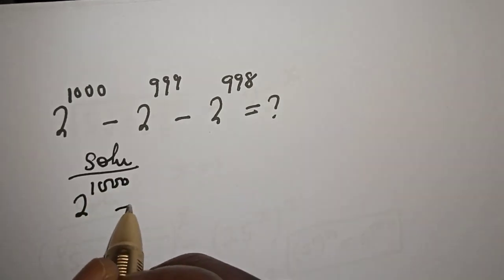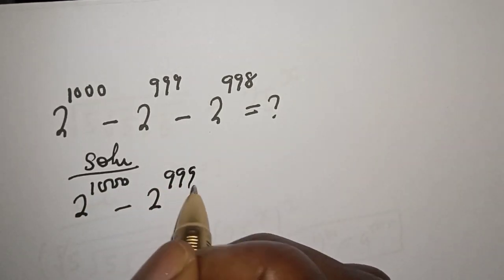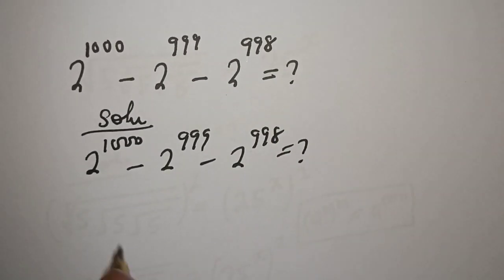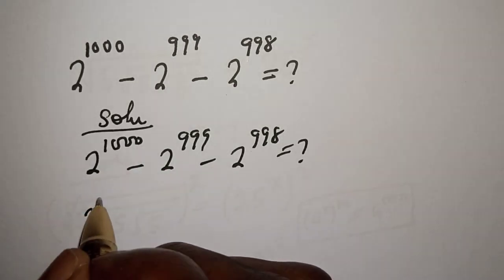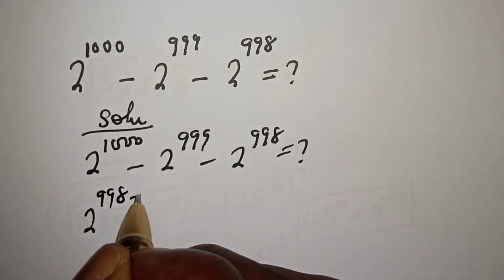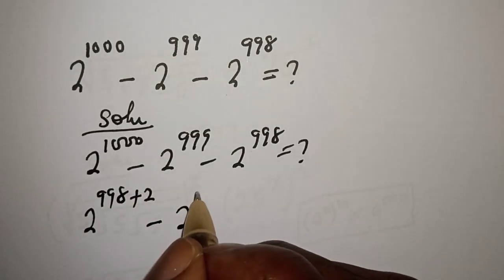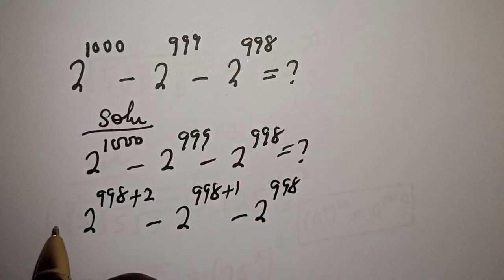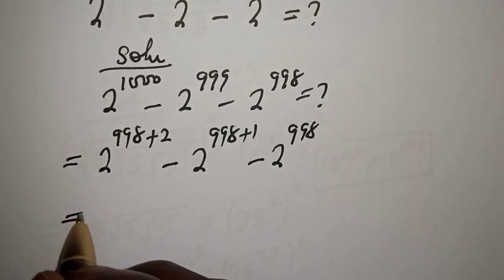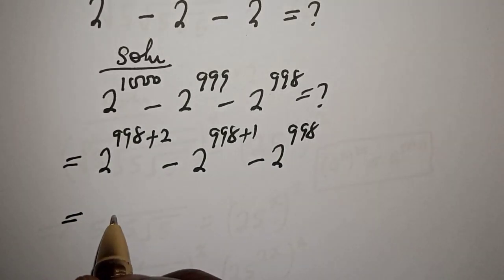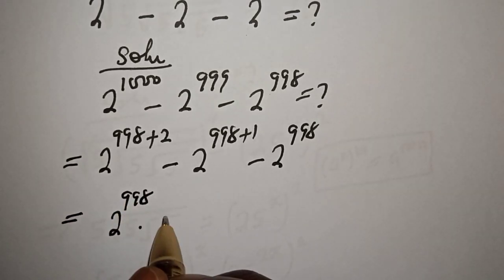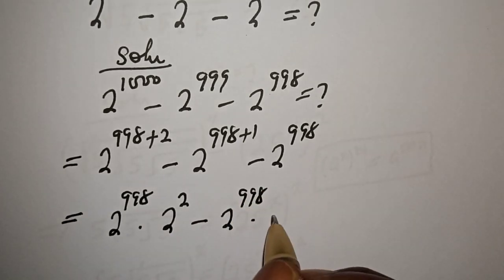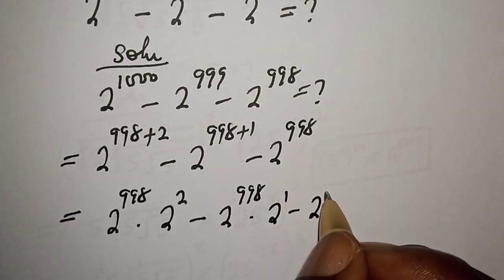So, 2 raised to power 1000 minus 2 raised to power 999 minus 2 raised to power 998 is unknown. This can be written as 2 raised to power 998 plus 2, minus 2 raised to power 998 plus 1, minus 2 raised to power 998. That is, 2 raised to power 998 multiplied by 2 squared, minus 2 raised to power 998 multiplied by 2 raised to power 1, minus 2 raised to power 998.